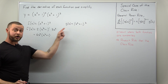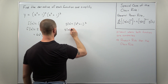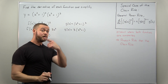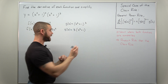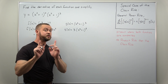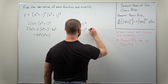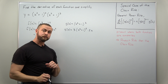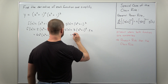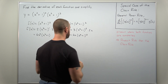Next we calculate g' again using the general power rule. We bring the power 3 down to get 3, keep the inside (x² + 1) the same, subtract 1 from the outer power to get 2, and multiply by the derivative of the inner function, which is 2x. Simplifying and rearranging, we get 6x times (x² + 1)².